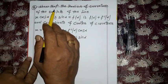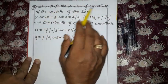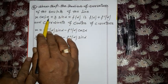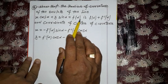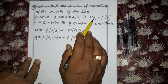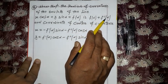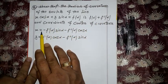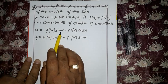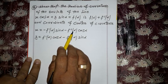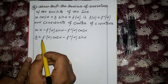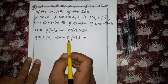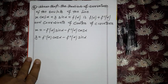Question: Show that the radius of curvature of the line x cos α + y sin α = f(α) is f(α) + f''(α), and the coordinates of the center of curvature are x = -f'(α) sin α - f''(α) cos α, y = f'(α) cos α - f''(α) sin α.